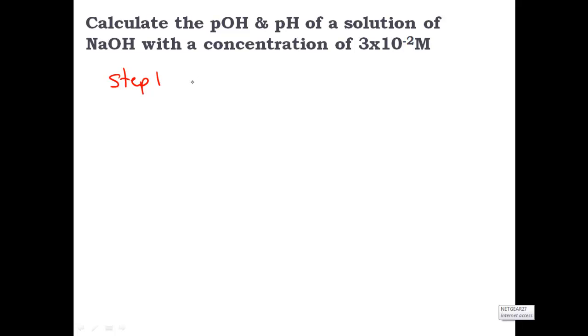Step one, the pOH is going to be equal to the negative log of my hydroxide ion concentration. Which means it's the negative log of 3 times 10 to the negative second. All right, dudes, why don't you take two seconds and calculate that to double check that you're getting the same answers as me and that you can use your calculators pretty good.